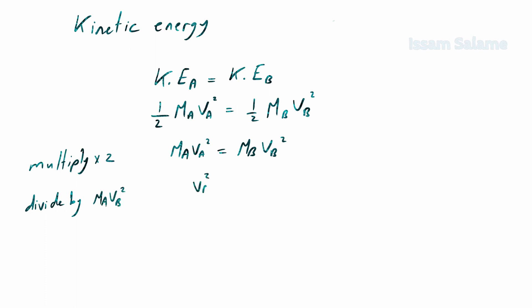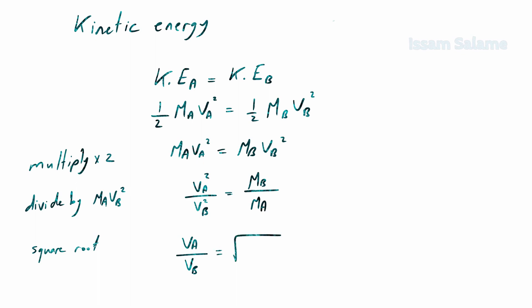Dividing both sides by M_A × V_B² gives V_A² / V_B² = M_B / M_A. Taking the square root of both sides, we get the rate of gas A divided by the rate of gas B equals the square root of the molar mass of gas B divided by the molar mass of gas A.